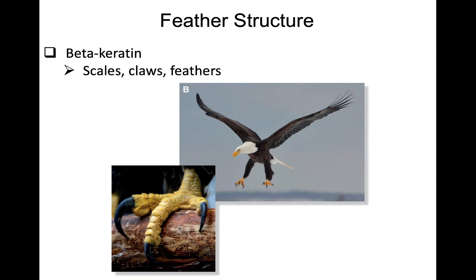Feathers are made up of beta-keratin, which is also the primary substance found in scales and claws. Once feathers grow in, that material is dead. As they're growing there is blood connection, but once growth is finished, the blood supply is cut off and the feather is a dead structure.